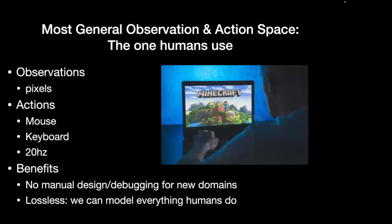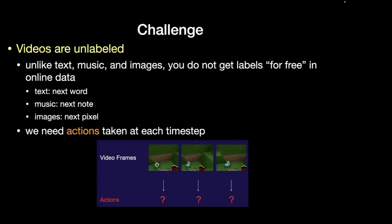The challenge with having an agent watch all YouTube videos is that YouTube doesn't come with action labels. Unlike text or music where you get the next token for free, with videos you don't have the actions the agent has taken — so you're not actually learning how to do anything in the world. You could train to predict future video frames, but you need the action at each time step.